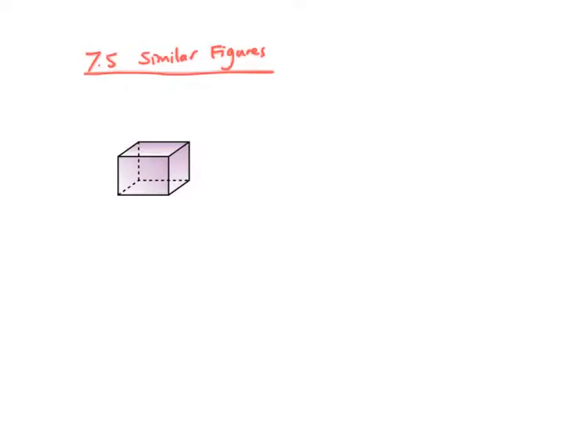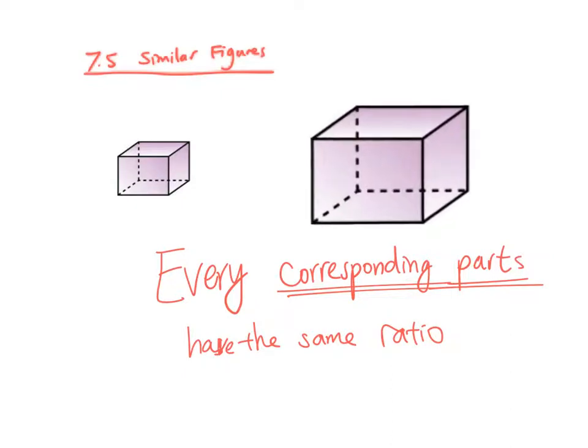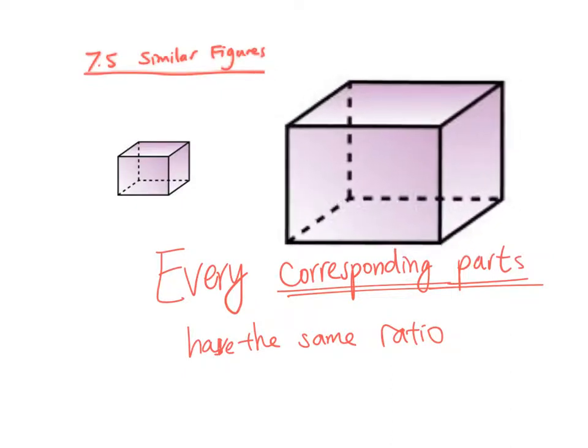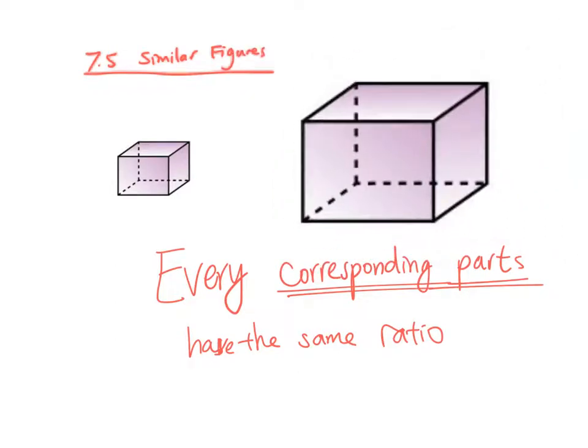So what's meant by similar figures in the beginning? We say that two figures are similar only if every corresponding parts have the same ratio. It means we are enlarging or reducing our figure. So the keyword is every. So it means that if you can find any one part that has different ratio, then they are not similar figures.